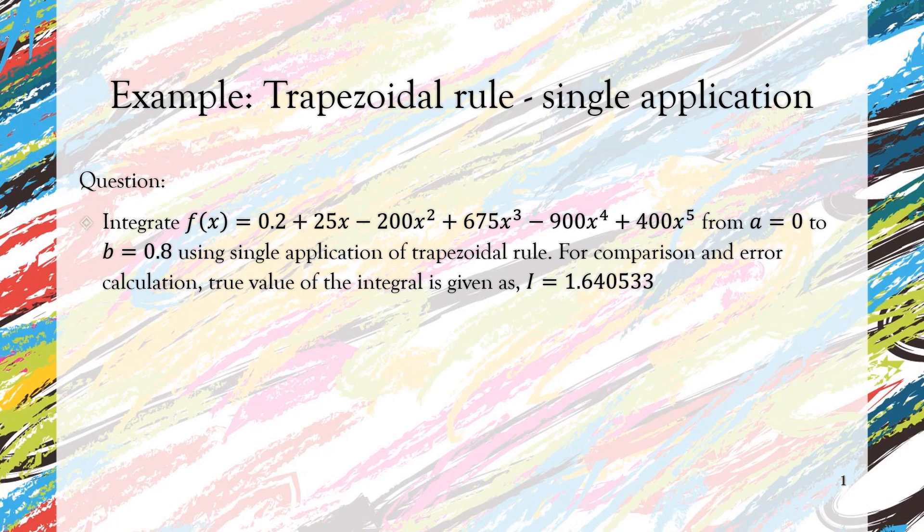Hello and assalamualaikum. Now let's take a look at an example of trapezoidal rule with single application. The question is similar to the one in the teaching slide. Let's read it through. Integrate f(x) = 0.2 + 25x - 200x² + 675x³ - 900x⁴ + 400x⁵ from a = 0 to b = 0.8.